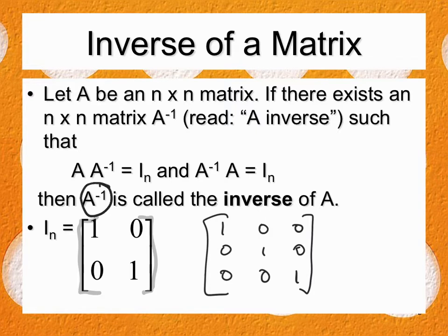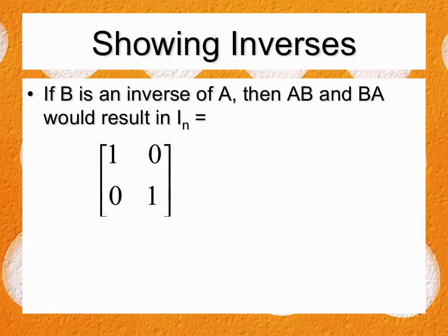A⁻¹ is how you denote an inverse, and on your calculator that's how you find it. If we're showing that B is an inverse of A, then A times B and B times A must both result in the identity matrix. You have to do both — if the first one doesn't work, it's no. If it does, you must switch the order and try again.